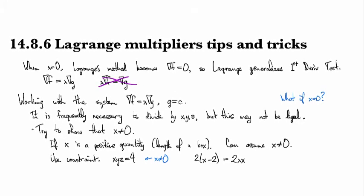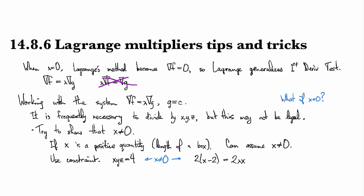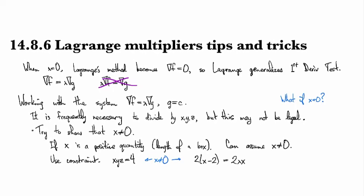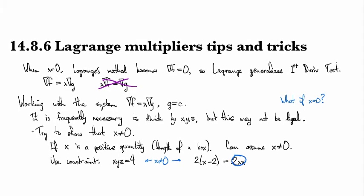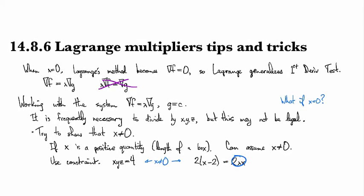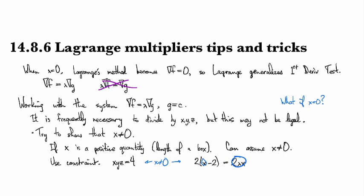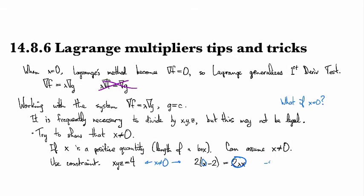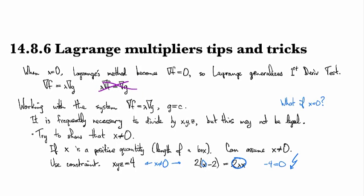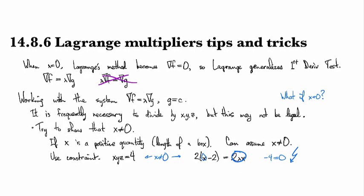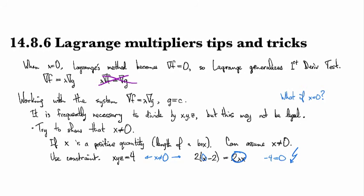So in this case as well, x cannot equal zero. Do you see why? Yeah. If x were equal to zero, then this whole side would equal zero, and then this side over here would equal minus four. And you'd end up with minus four equals zero. And that can't happen. Yeah. So it would violate one of your equations.